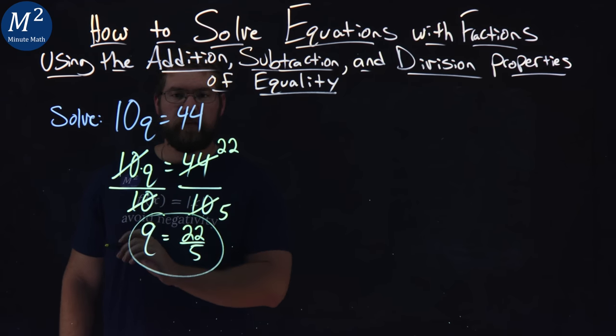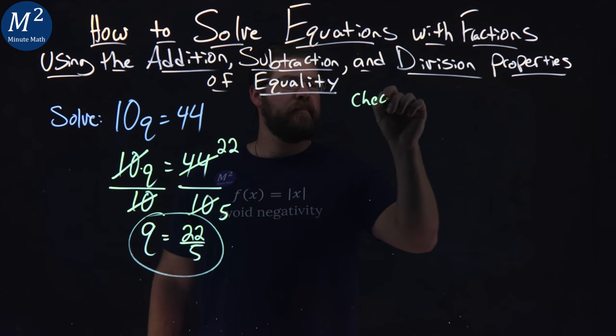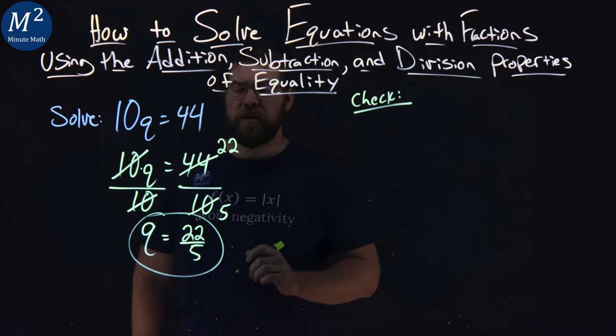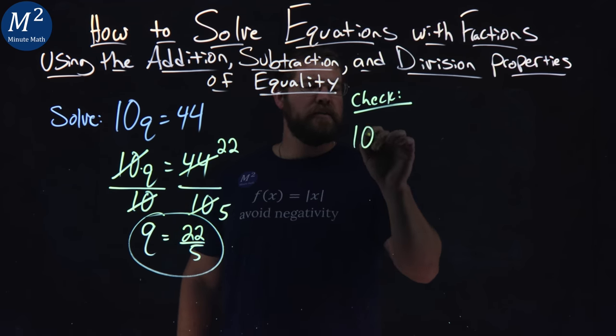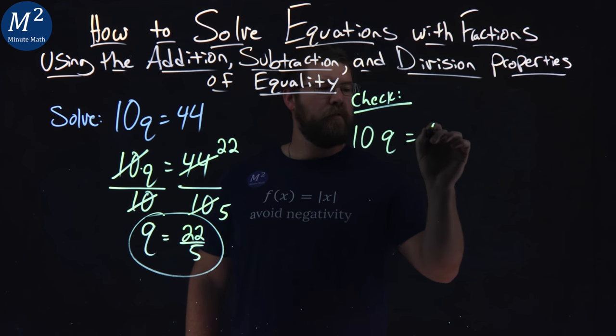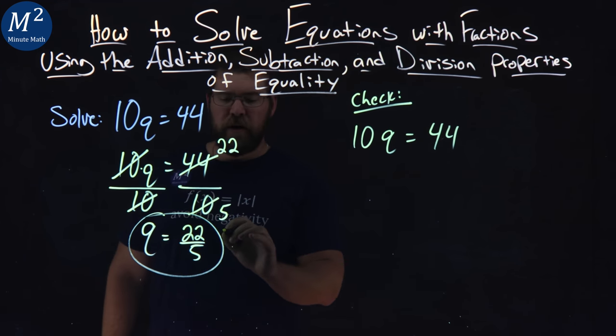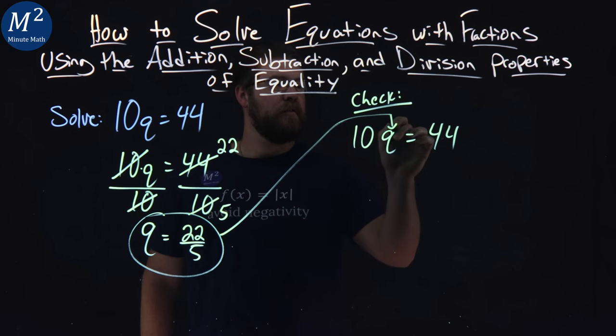Pretty good answer here. Let's go check it. To check it, I rewrite my equation: 10q equals 44. From there, 22 over 5 goes in for q.